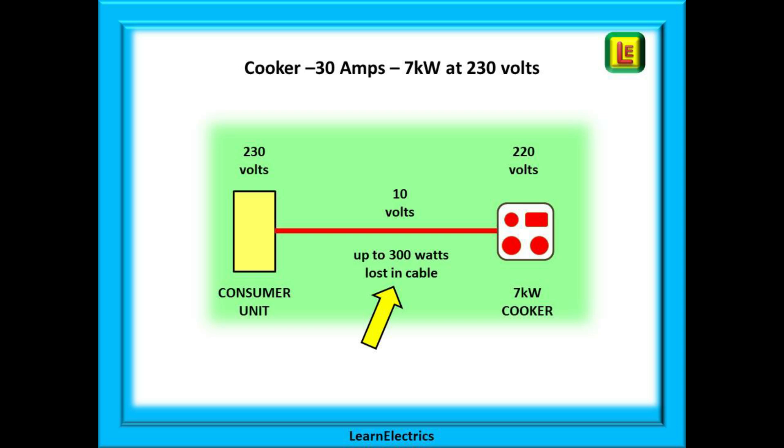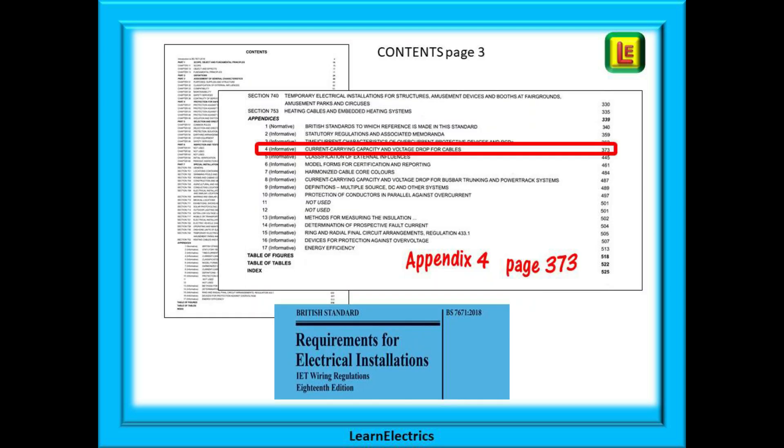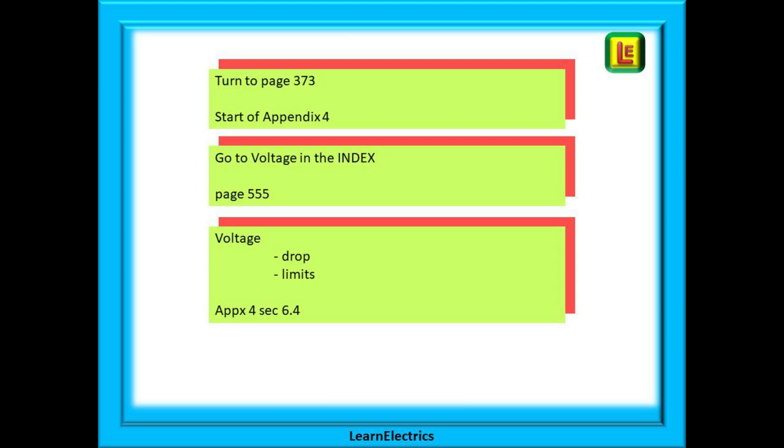We can start by looking in the wiring regulations and answering the first question: what is the maximum permitted voltage drop and where do we find the answer? If you've watched other videos from Learn the Electrics, you will know that page three of the wiring regulations book is our go-to page. Always go to page three first. It is full of lots of information. Page three is the main contents page, and scanning down towards the bottom we find the appendices. Look at appendix four. It says current carrying capacity and voltage drop for cables. We can turn to page 373 as directed to the start of appendix four.